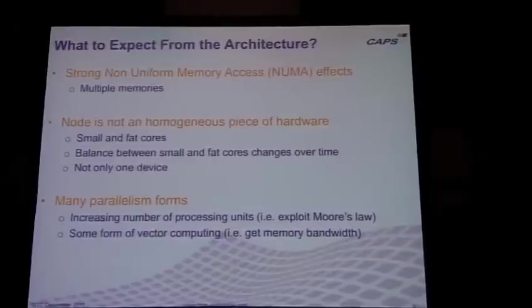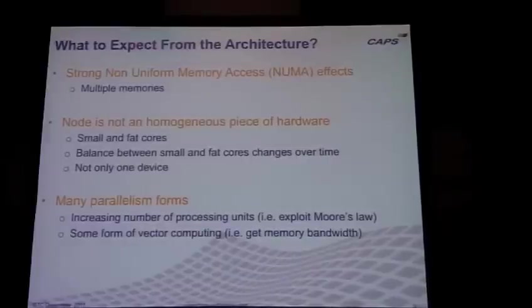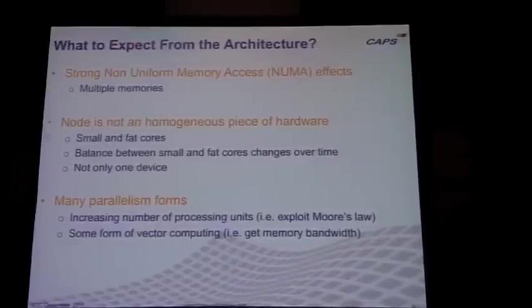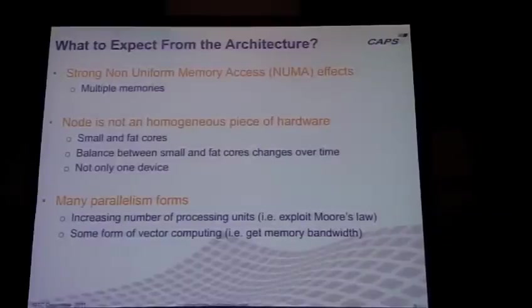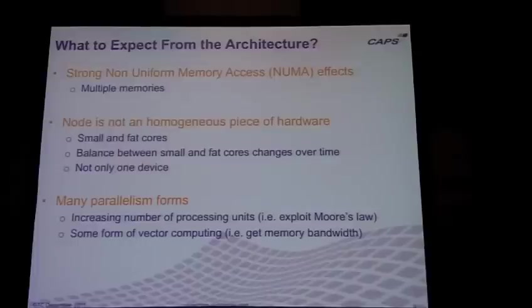You have to expose multiple forms of parallelism if you want to take full advantage of the device. One is the number of cores and the number of threads supported by hardware. The other is vector parallelism — on CPUs you get AVX, and the vector instructions are getting larger and larger. As they get larger, you can't ignore that level of parallelism when finding a trade-off between thread and vector parallelism.